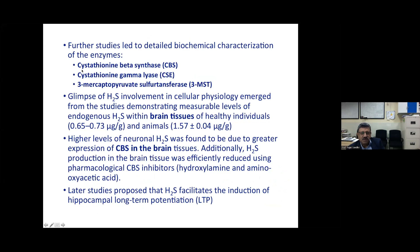Studies in the 1980s identified key enzymes in these pathways: cystathionine beta-synthase (CBS), cystathionine gamma-lyase (CSE), and a more recently discovered enzyme called 3-mercaptopyruvate sulfurtransferase (3MST). These three enzymes confirmed a biosynthesis pathway for H₂S exists in cells. Measurements in human brain tissue showed H₂S concentrations of 0.65–0.73 µg/g, and slightly higher in animals at 1.57 µg/g. Notably, the brain appeared to contain more H₂S than other tissues.